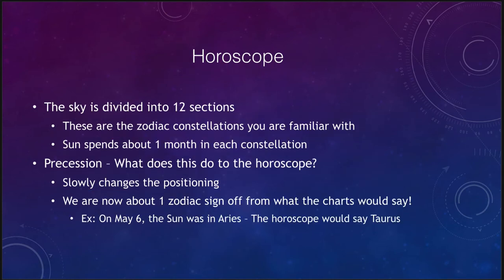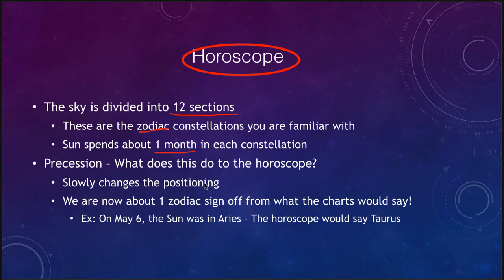Let's take a look at some horoscopes. The sky is divided into 12 sections — the constellations of the zodiac. On average, the sun spends about one month in each constellation. In reality, the sun can spend as little as a week in some constellations and more than a month in others, so they are not actually uniform — they are all divided into one-month sections in horoscopes, but that's not what actually happens.